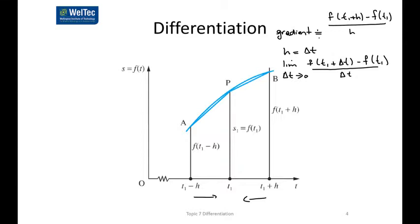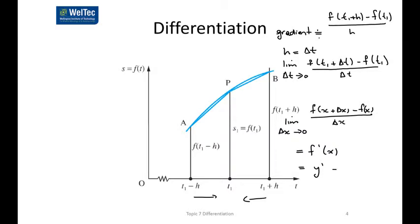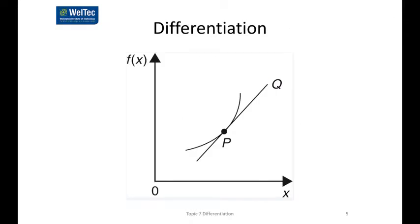Typically, we define this gradient as the derivative. You're probably more likely to see it as the limit as delta x tends towards zero of f(x + delta x) minus f(x), all over delta x. We would write that as f′(x), or y′, or dy/dx. D is the anglicised version of the delta symbol — delta means change. It's all about the change in y with respect to the change in x. This is the standard differentiation diagram, and what it says is that the slope of the curve is the slope of the tangent to the curve at that point P.